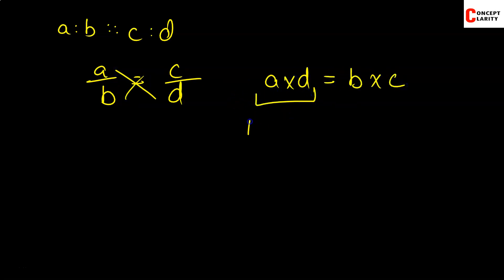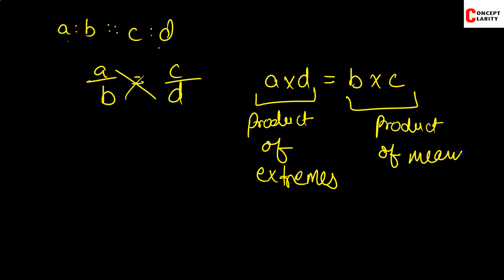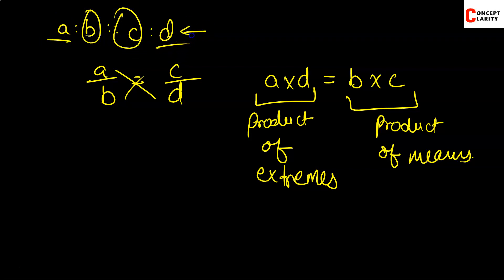So what do we say? It is the product of extremes. A and D are the extreme quantities — they lie at the ends. The product of means is the product of the in-between quantities, B and C, which lie in the center. You don't have to learn a separate formula — just cross multiply and you get it.